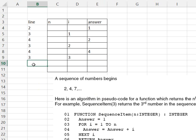And line 4, answer is going to be the current value of answer, which is 4, plus i, which is 3. 4 plus 3, 7.